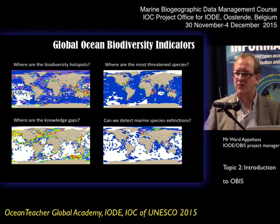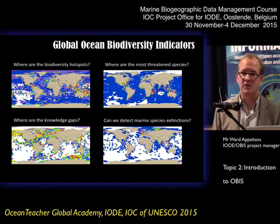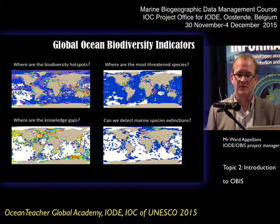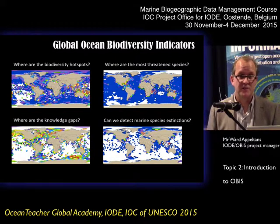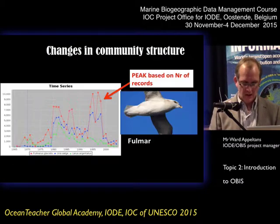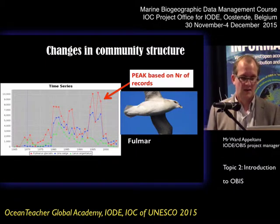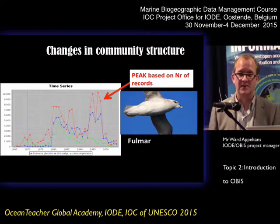Thinking about indicators we can produce, the most obvious are: where are the biodiversity hotspots? Where are the most threatened species? Where are the biggest gaps in our knowledge? Can we detect marine species extinctions? Are there population size changes? Other more difficult but very important things are changes in community structure. If you just look at the number of records, that's not a good indicator of how a species is doing.